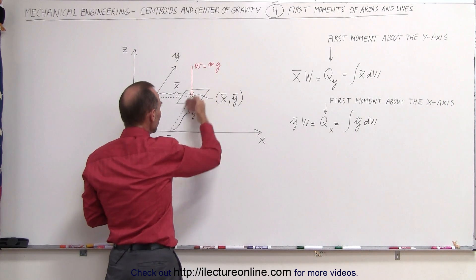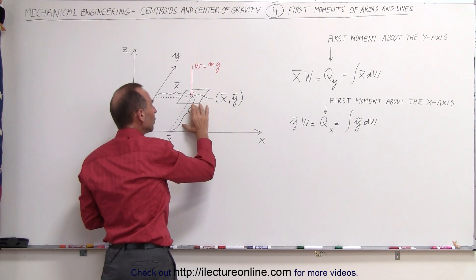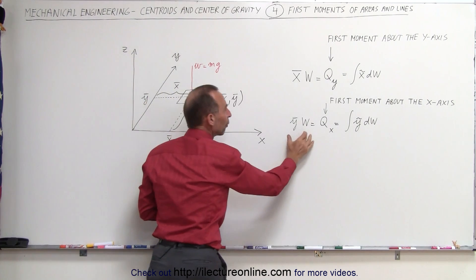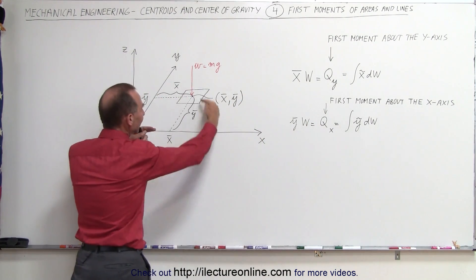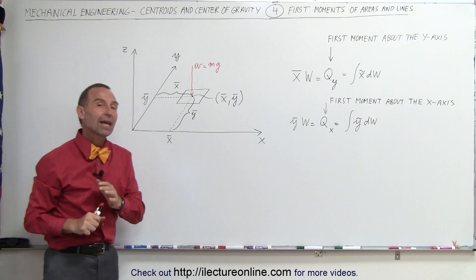The weight of the object, multiplied times the distance away from the x-axis, which is the y-coordinate to the center of gravity, forms the first moment about the x-axis. And so that's where that terminology came from.